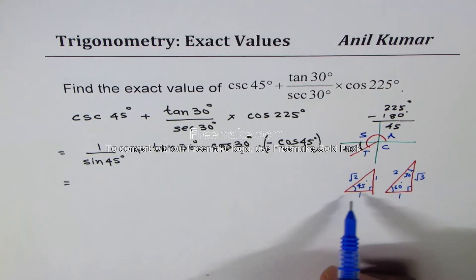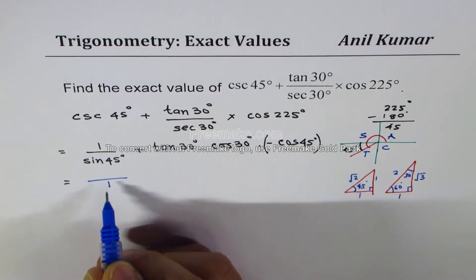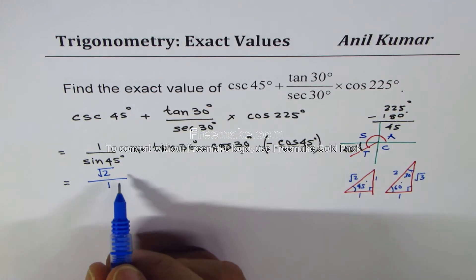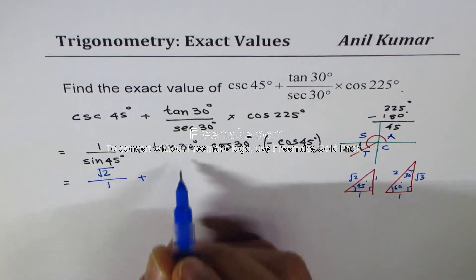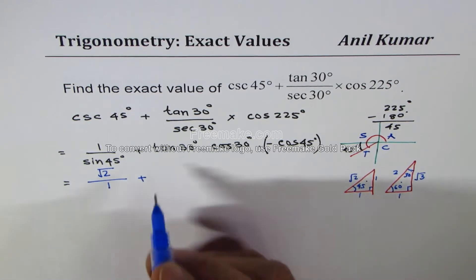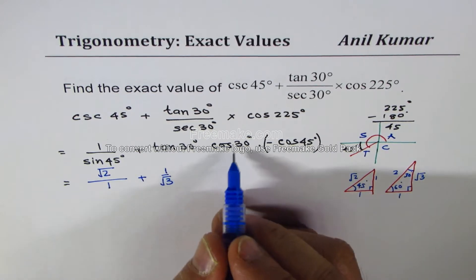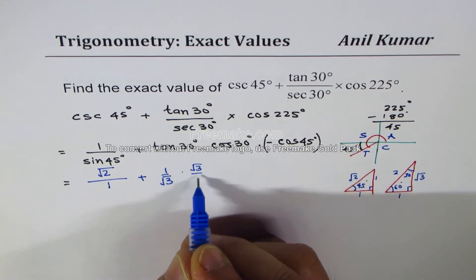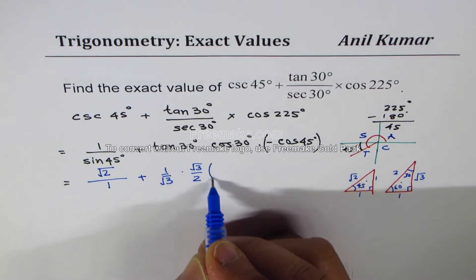Sine of 45 is 1 over square root 2, so when it comes in the denominator I write this as square root 2 — not writing layers of fractions. Plus tan of 30 degrees: tan is opposite over adjacent, which gives 1 over square root 3. Cos of 30 degrees is adjacent over hypotenuse: square root 3 over 2.